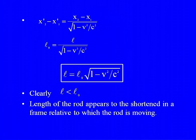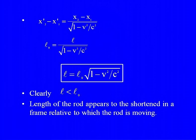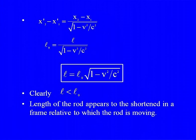Clearly, L = L₀√(1 − V²/c²) shows that the length measured in the frame in which the rod is moving is less than L₀. To be precise, L ≤ L₀, with equality only when V = 0. This is length contraction: the length of a rod appears shortened in the frame relative to which the rod is moving.